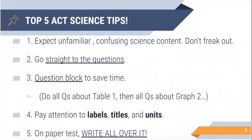These are five top tips for ACT science. Number one is expect unfamiliar, confusing science content. Because all of the students in America take different science classes, it would not be fair if they tested you over chemistry knowledge or physics knowledge. Not everybody takes those classes, so it's going to be something you've probably never seen before. That's okay — you just have to read the passage and read the graphs.